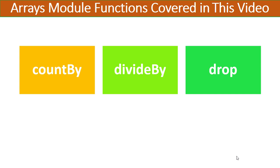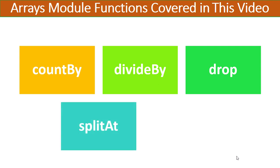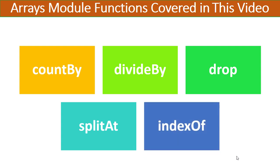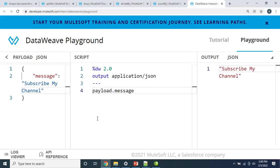Then we will see how we can use the drop function to drop some elements out of an array, and then we will see how we can use the splitAt function, which is another quite useful helper function that splits one array into two arrays based on a condition provided as a parameter. Last but not least, we will see the very commonly used helper function indexOf. If you come from any programming language background like Java or any other language, you might already be familiar with this function. IndexOf provides us the index of the first occurrence of a specific element in an array. So without further ado, let's go to the DataWeave playground and start demonstrating how to use these helper functions from the arrays module.